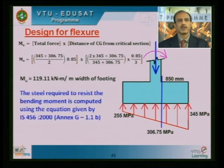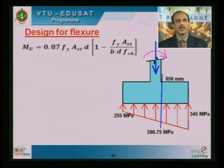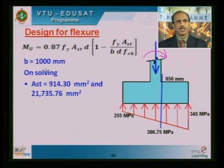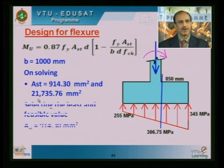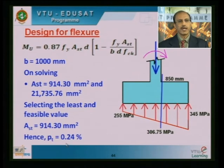Using the IS 456 quadratic equation with B = 1000 mm, d = 376 mm (upper layer), and Mu = 119.11 KNm per meter width, we solve for Ast. The two solutions are 914.30 mm² and 21735.76 mm²; taking the smaller value gives Ast = 914.30 mm². Converting to Pt: the percentage of steel is 0.24 percent.